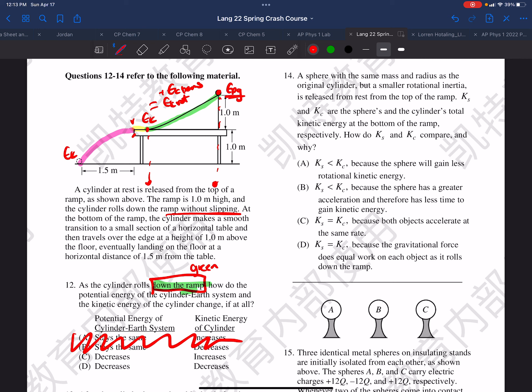And then we want to know, what happens to the kinetic energy? Well, we do have gravitational potential energy being converted to kinetic energy. So the kinetic energy of the cylinder increases.